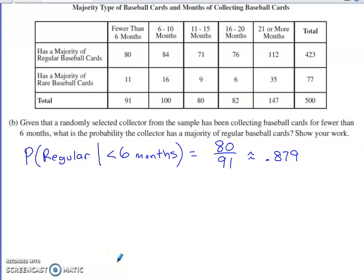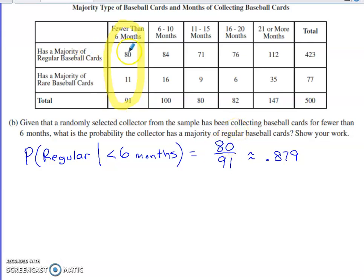Part B is another probability calculation: given that a randomly selected collector from the sample has been collecting for fewer than six months, what is the probability that the collector has a majority of regular cards? We only need to consider that one column. There are 91 total people who've been collecting for fewer than six months, and 80 of them have the majority regular. Using conditional probability reasoning with the two-way table, that gives us 80 out of 91, which is approximately 0.879.